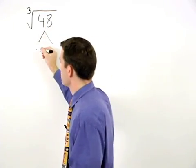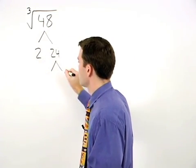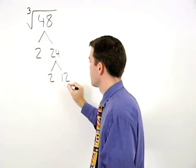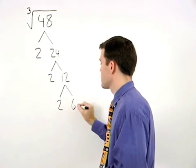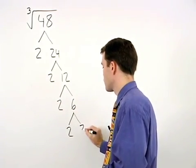48 is 2 times 24, 24 is 2 times 12, 12 is 2 times 6, and 6 is 2 times 3.